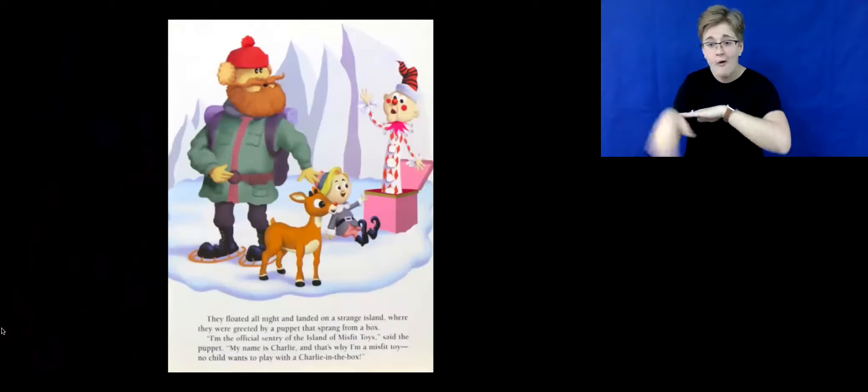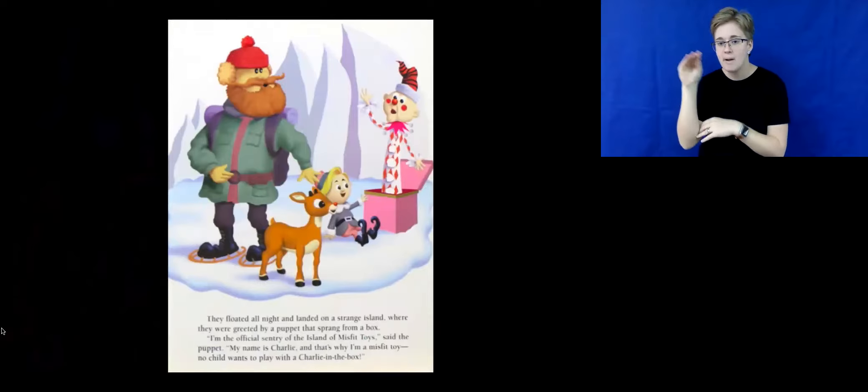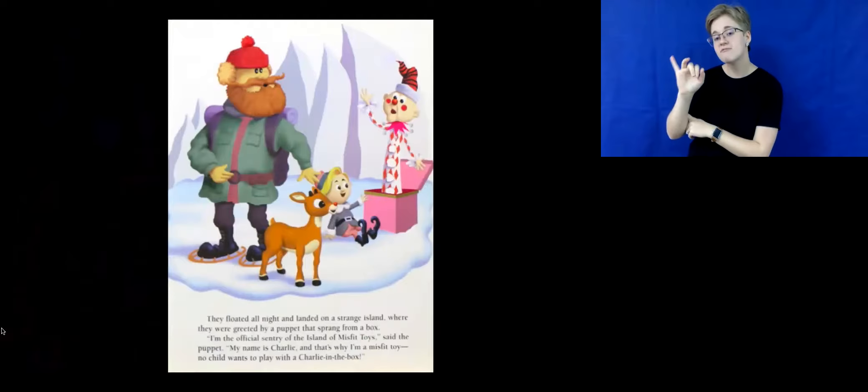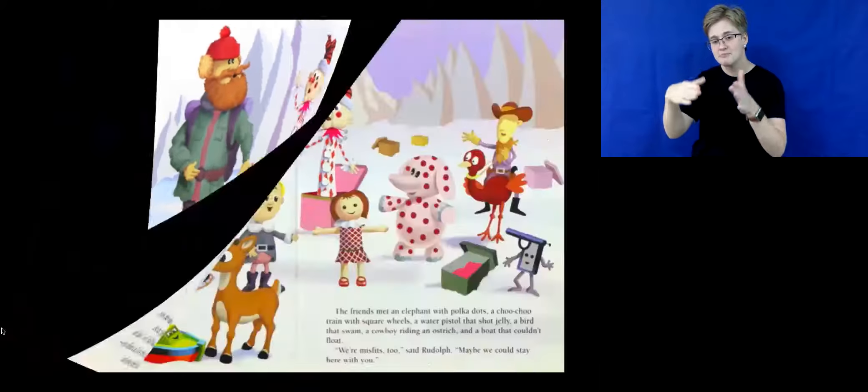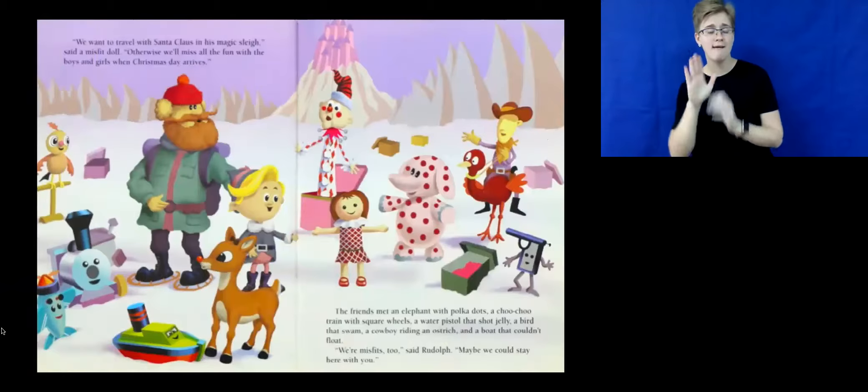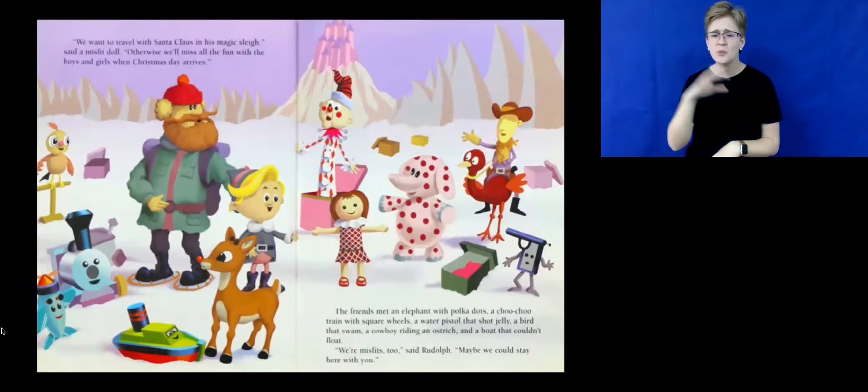They floated all night and landed on a strange island where they were greeted by a puppet that sprang from a box. I'm the official sentry of the island of Misfit Toys, said the puppet. My name is Charlie and that's why I'm a Misfit Toy. No child wants to play with a Charlie in the box. We want to travel with Santa and his magic sleigh, said a Misfit doll. Otherwise, we'll miss all the fun with the boys and girls when Christmas Day arrives.